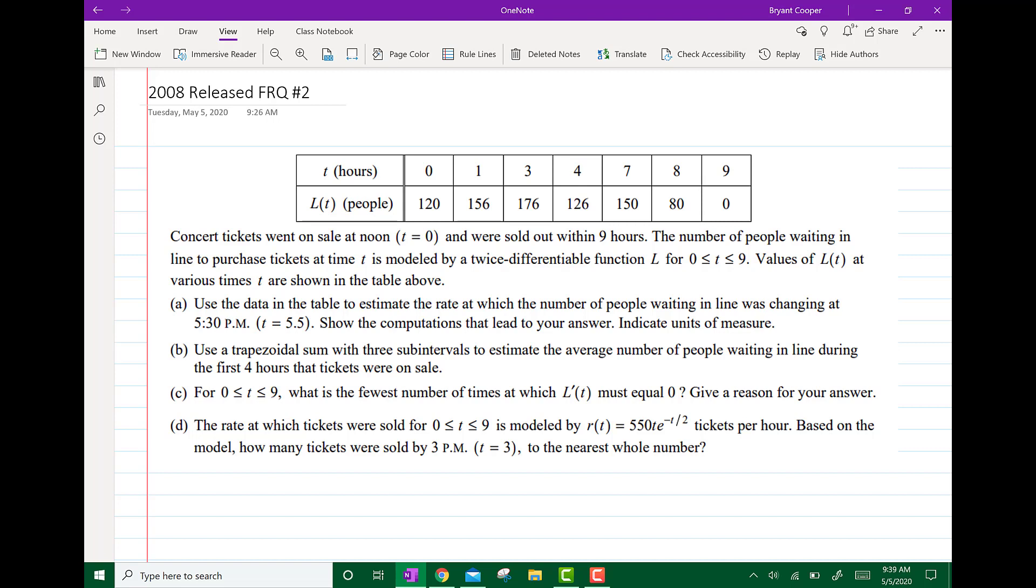So it says concert tickets went on sale at noon at t equals 0 and were sold out within 9 hours. The table up here represents how many hours. The number of people waiting in line to purchase the tickets is modeled by a twice differentiable function L for 0 to 9. Values of L(t) at various times are shown in the table. So at 0 hours it shows that there's 120 people waiting in line. In one hour there's 156 and so on.